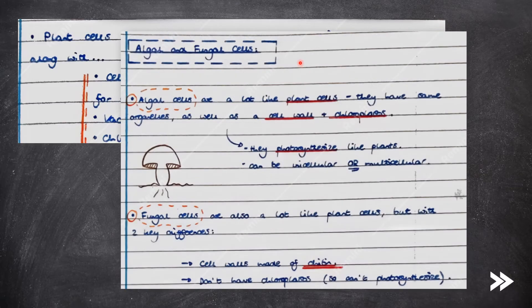Algal cells are a lot like plant cells — they have the same organelles as well as a cellulose cell wall and chloroplasts. They can therefore photosynthesise like plants, but they can be unicellular or multicellular.